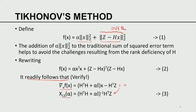Now observe: H transpose H by itself is singular, but I am adding alpha times the identity matrix — this is called diagonal perturbation. This changes only the diagonal elements of H transpose H. By adding a diagonal perturbation to a singular matrix, the whole matrix becomes non-singular. If the matrix is non-singular, I can compute the inverse, and if I can compute the inverse, I have the solution. We are solving a modified problem, not the original.